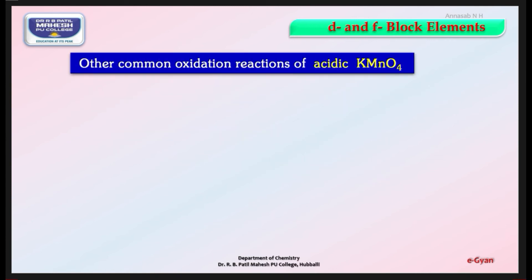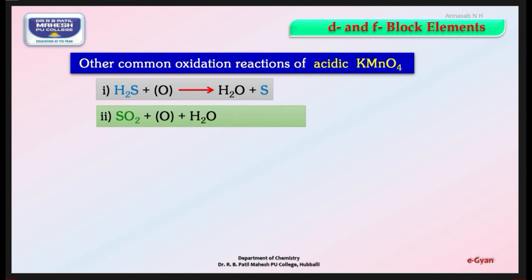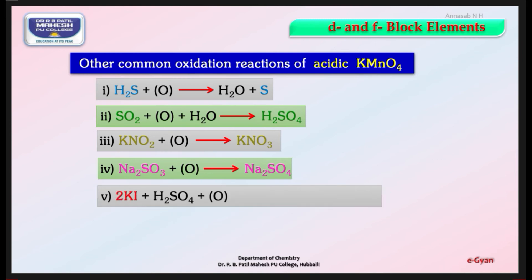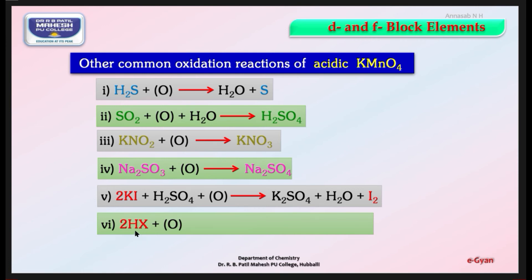Other common oxidation reactions of acidic KMnO4: H2S on oxidation gives water and sulfur. SO2 on oxidation in presence of water gives H2SO4 (sulfur dioxide oxidized to sulfuric acid). KNO2 on oxidation gives KNO3. Na2SO3 on oxidation gives Na2SO4. Potassium iodide with H2SO4 in presence of KMnO4 gives K2SO4, H2O, and iodine. Hydrogen halides (HX where X = Cl, Br, I) undergo oxidation in presence of KMnO4 to give water and the halogen.